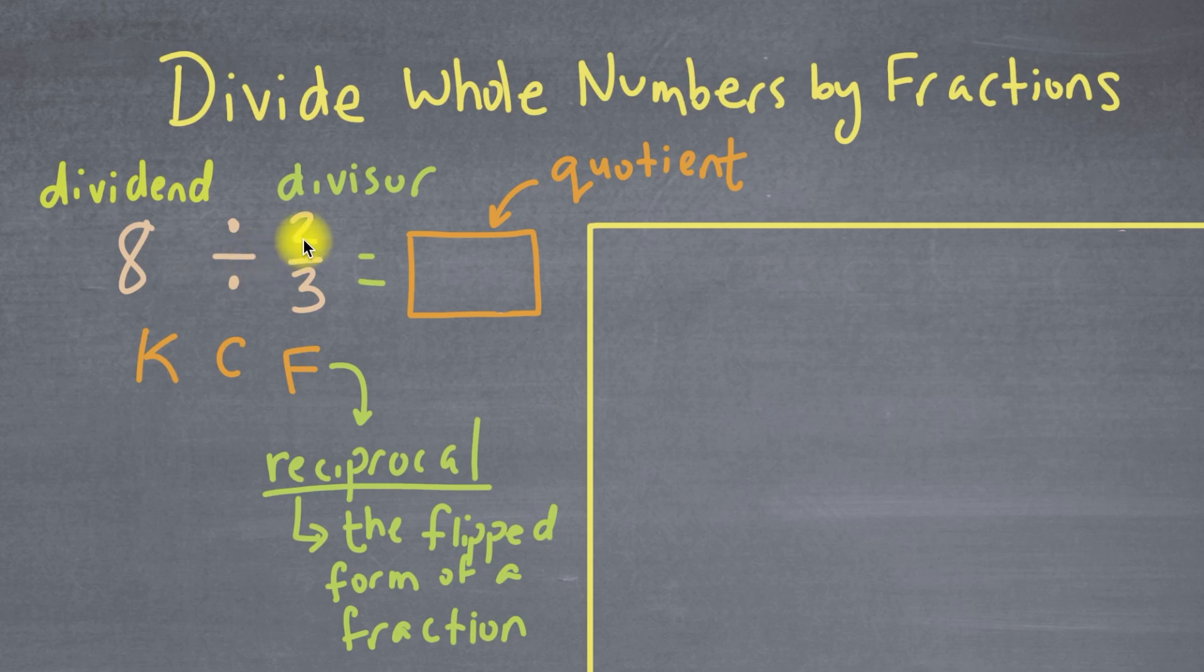So now that we have 8 divided by 2 over 3, we know that we have to use KCF. But like the last problem, we need to make sure that everything is a fraction, including the dividend. And how do we turn this dividend of 8 into a fraction? Well, we'll make it 8 over 1.